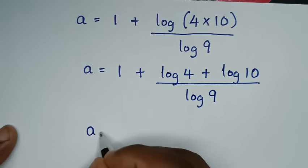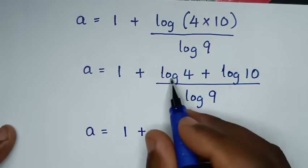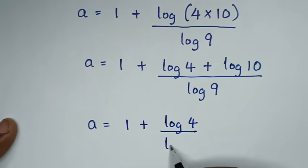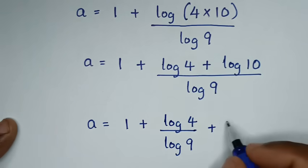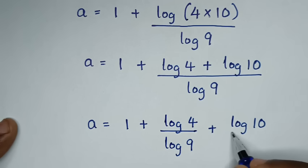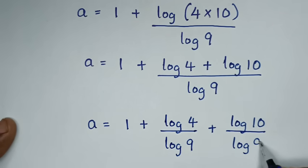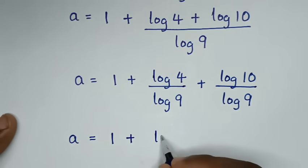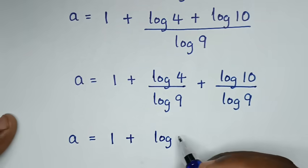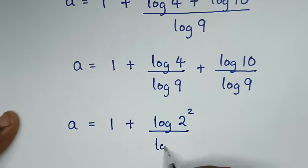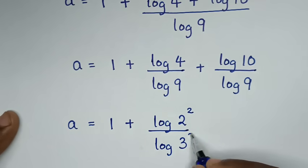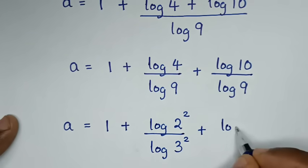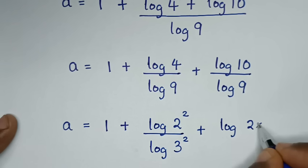Then in the next step, it will be a is equal to 1 plus, dividing by log of 9 in each part: log of 4 over log of 9 plus log of 10 over log of 9. Then it will be a is equal to 1 plus log of 4 — where 4 is the same as 2 squared — over log of 9, where 9 is the same as 3 squared. Then plus log of 10, which in prime numbers is 2 times 5.